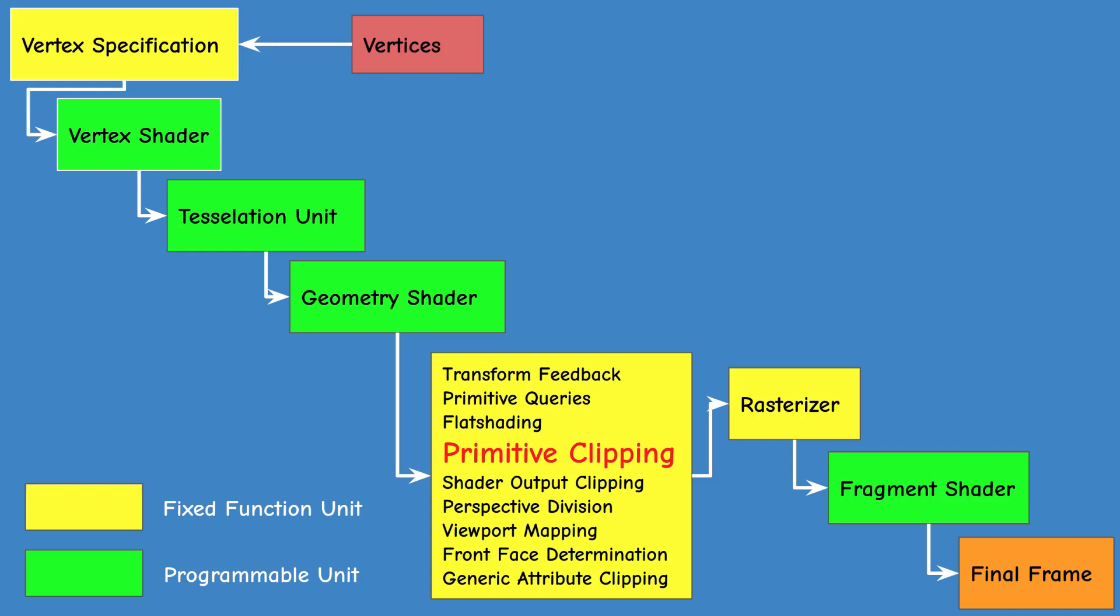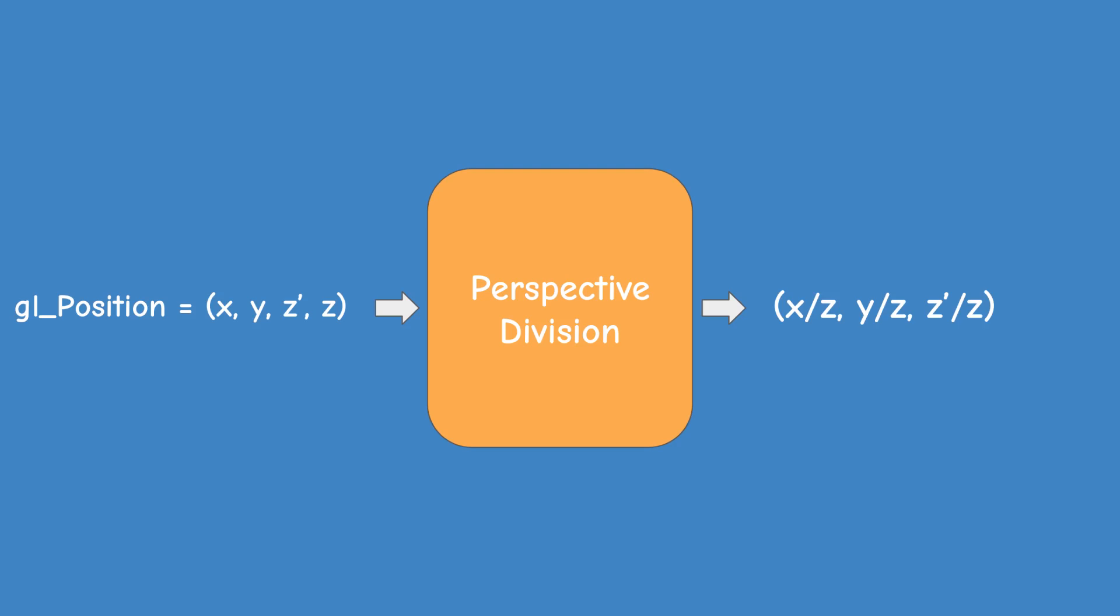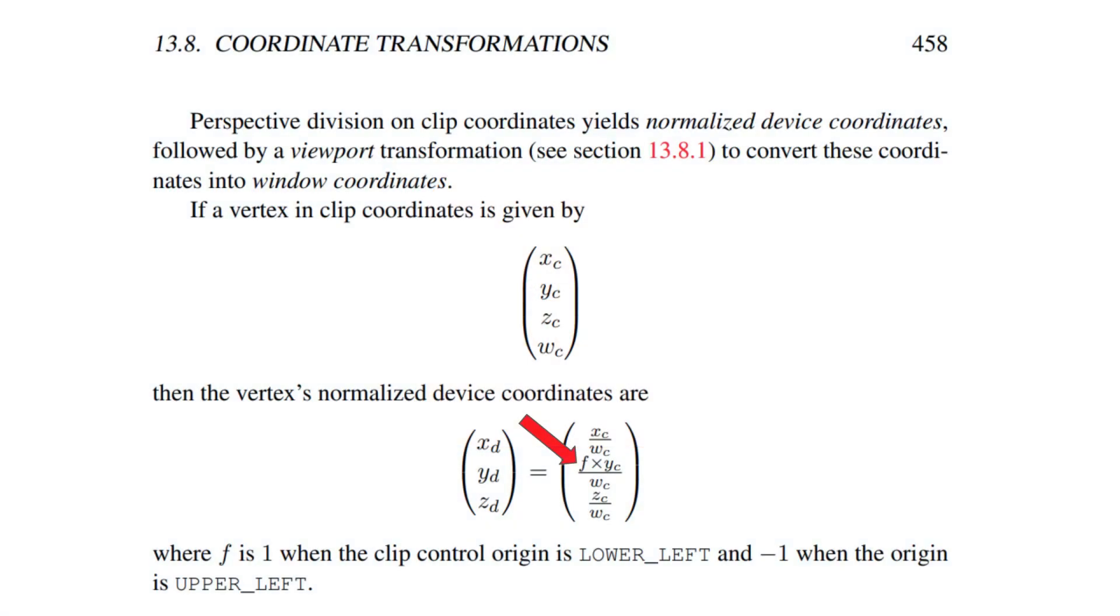After the two clipping stages we perform perspective division and then viewport mapping. As we already know, the result of perspective division is a 3D vector where every coordinate has been divided by W. W itself is now always 1, so we can simply ignore it. Let's take a look at this topic in the OpenGL specification.